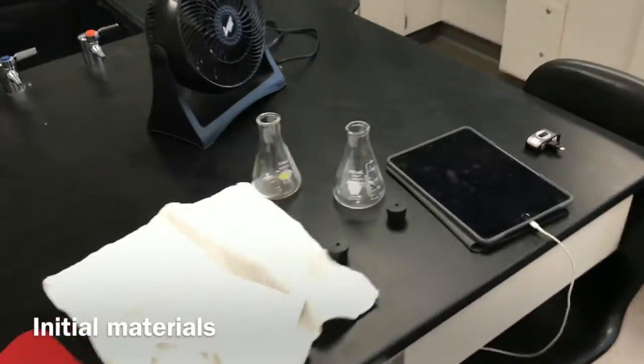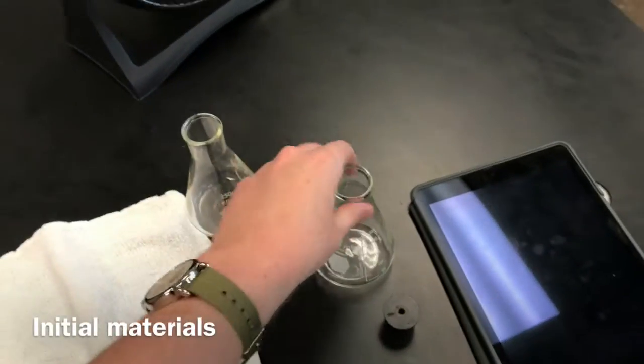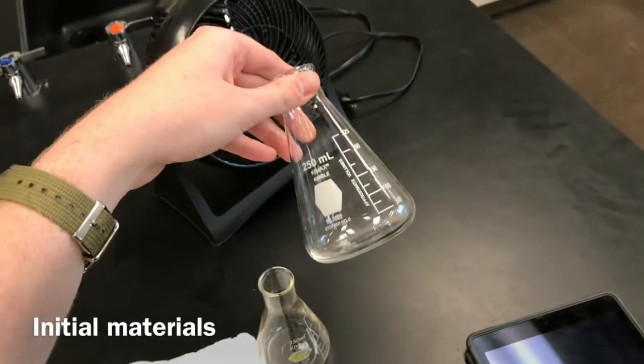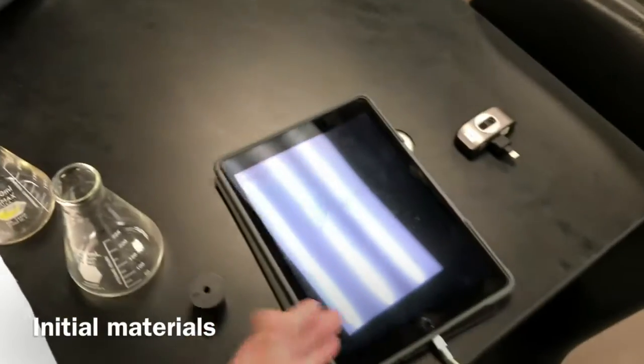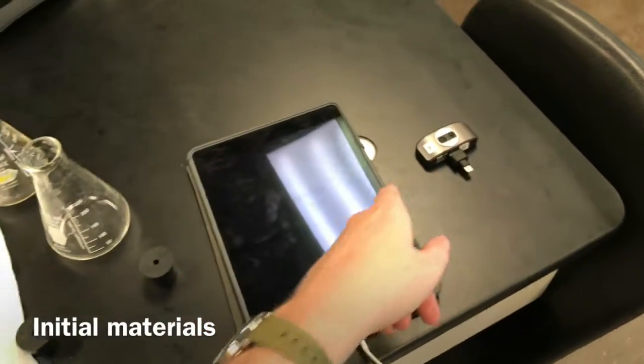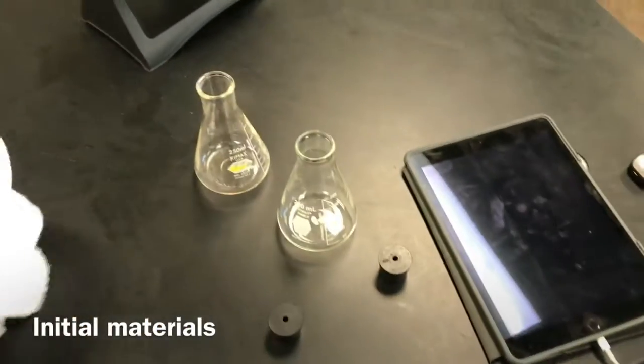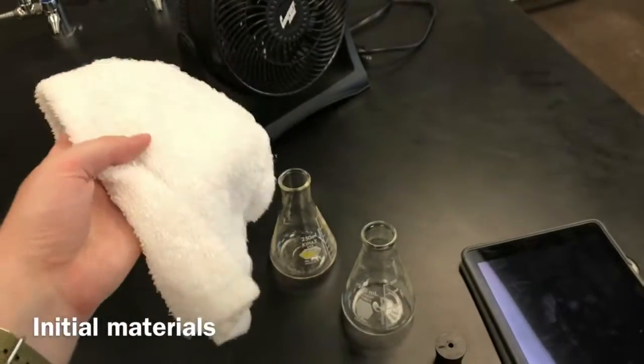So for this lab you're gonna need two of these 250 milliliter Erlenmeyer flasks, you're gonna need a fan, your iPad, thermal camera, and just a towel. You'll need a towel to set your flasks on eventually.